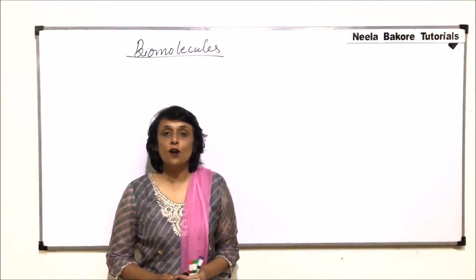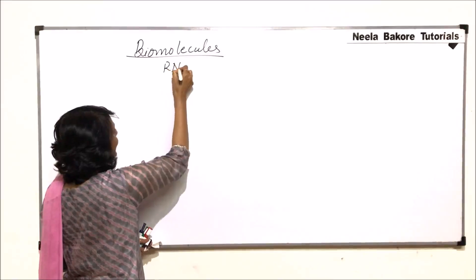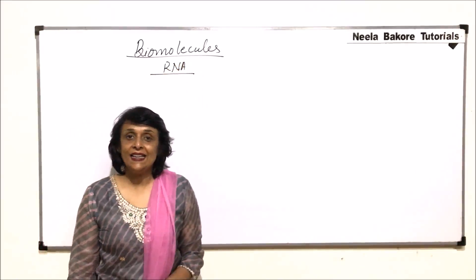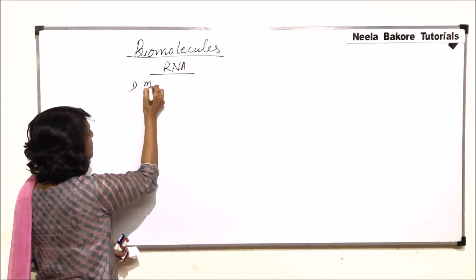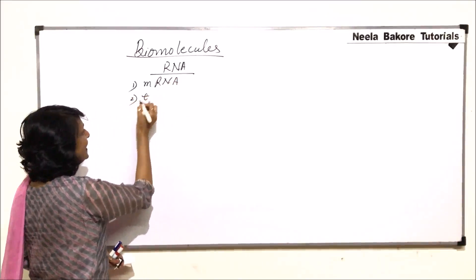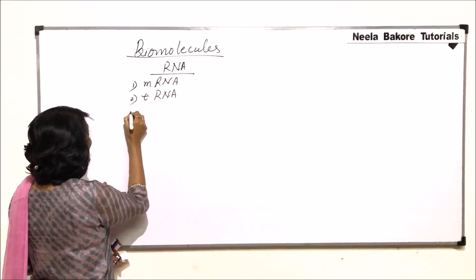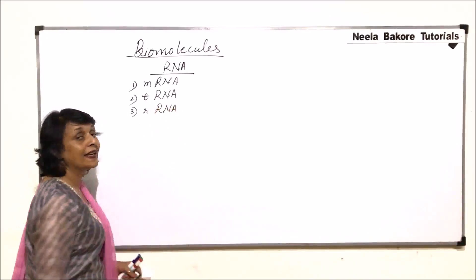In this part, we will talk about the other nucleic acid that is RNA or ribonucleic acid. RNAs are of three types. First, mRNA that is messenger RNA, then tRNA which is transfer RNA and third is rRNA, ribosomal RNA.